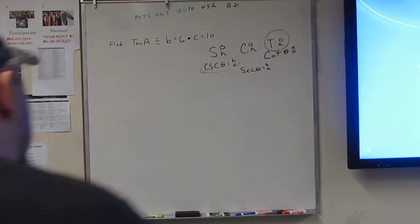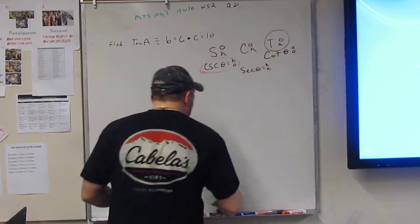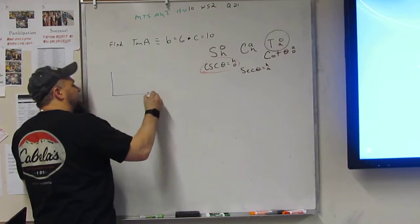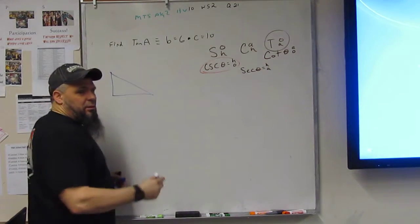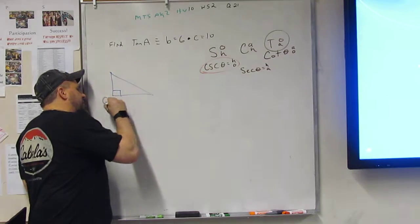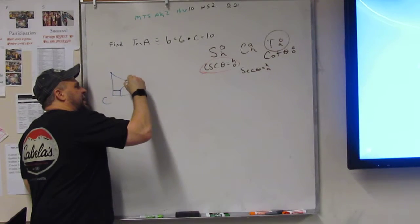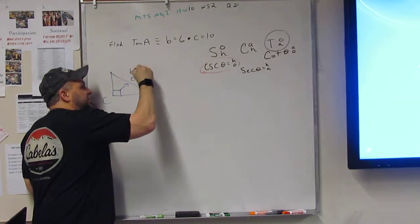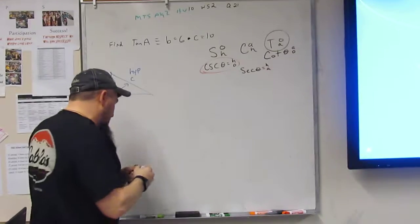Alright, so 21 is a lot like 23. Again, we have a triangle. C is the right angle. That means the side across from it is little c, which also means the side across from it is the hypotenuse.